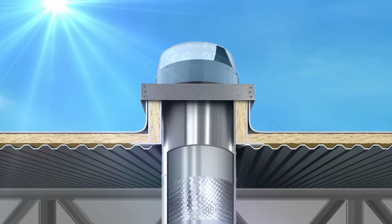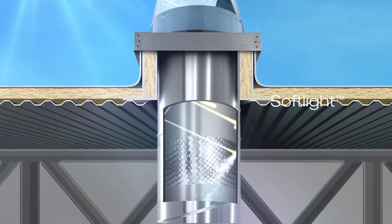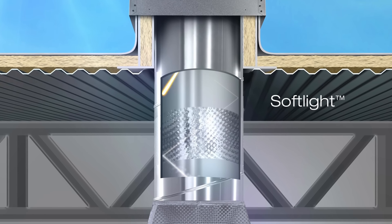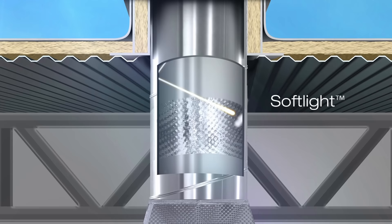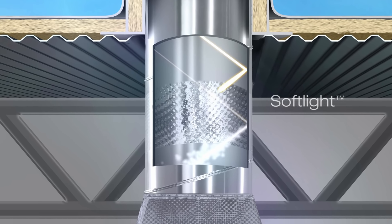The newest addition to our advanced technologies is SoftLight, a textured section within the length of Spectralight Infinity Tubing that progressively diffuses the daylight with each bounce, softening and spreading the light more evenly and optimizing it for the next step in the process.